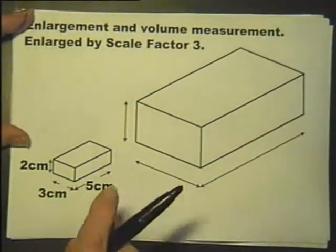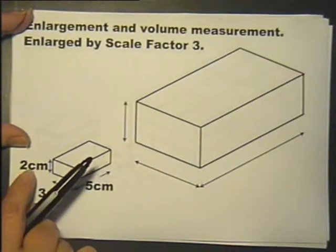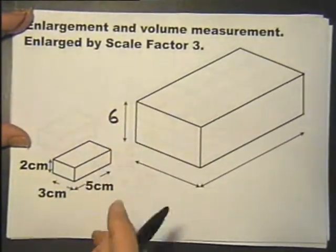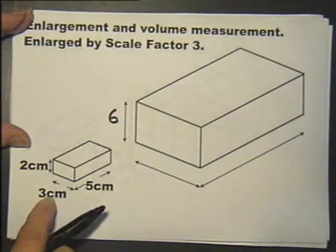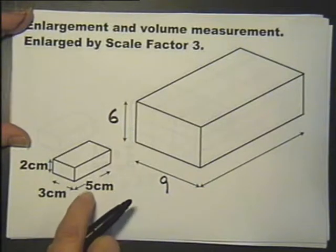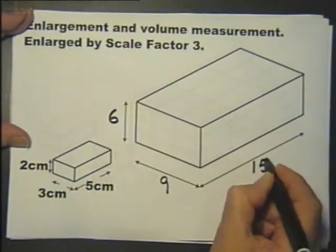So here we have the diagram, the original block and the enlarged block. The height of this is 2, the height of this is 6. The width of this is 3, the width of this is 9. The length is 5, the length of this one is 15.